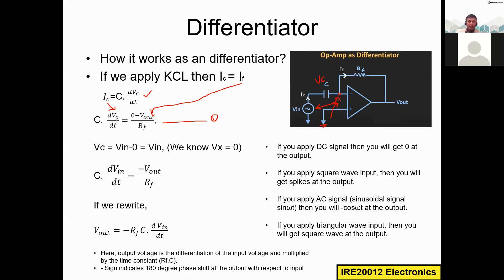Substituting, we get: C × dVin/dt = −Vout / Rf. Rearranging for Vout gives: Vout = −Rf × C × dVin/dt. This is the output voltage equation of the differentiator — an important result.